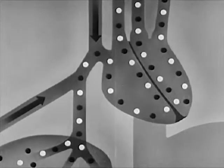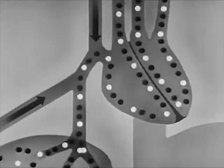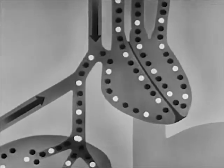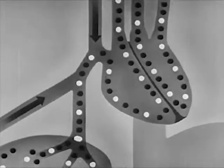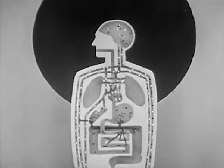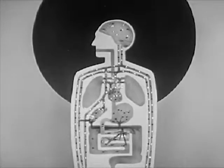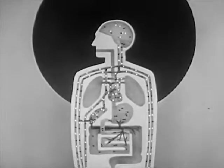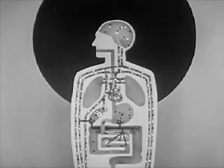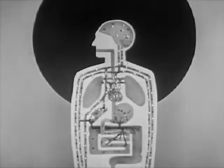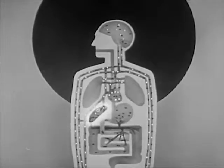The more alcohol that reaches the liver at one time, the more alcohol goes on to the heart unchanged. The heart pumps this blood containing alcohol and acetic acid into the arteries and on to all parts of the body.